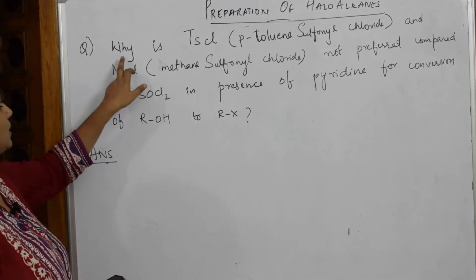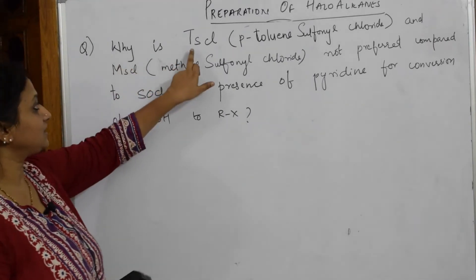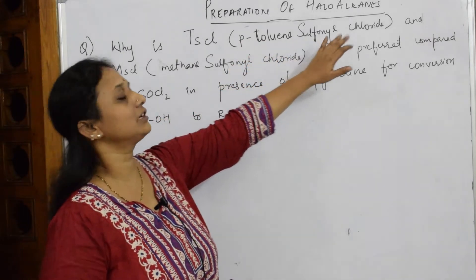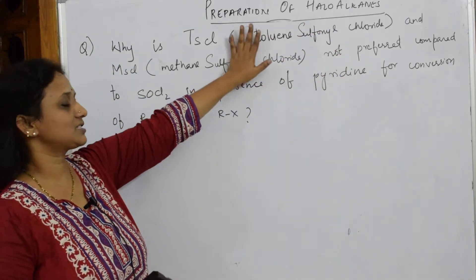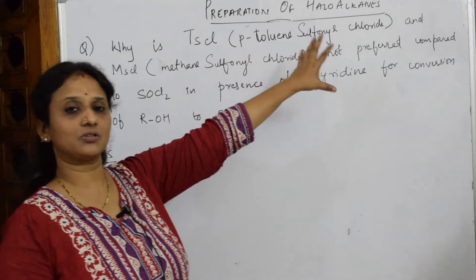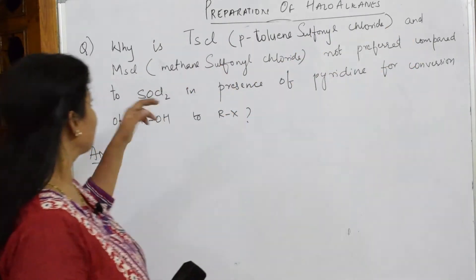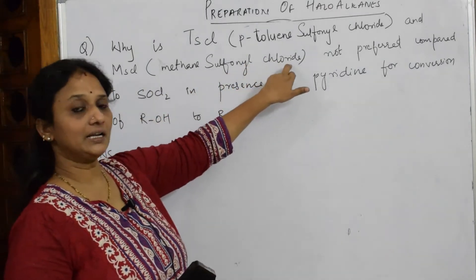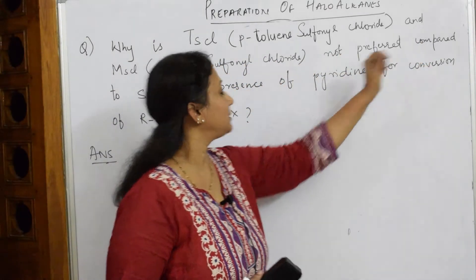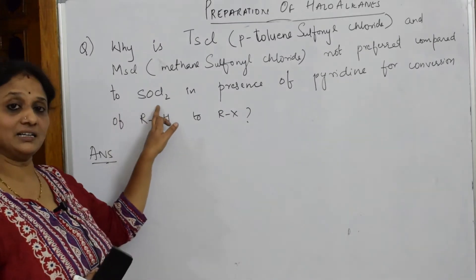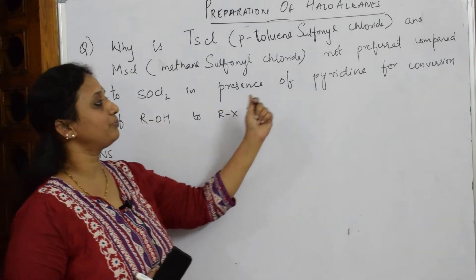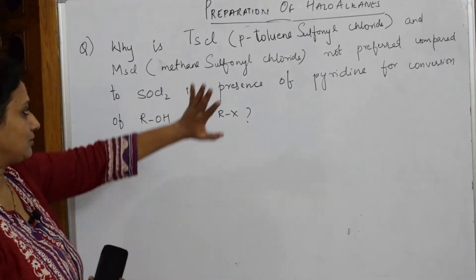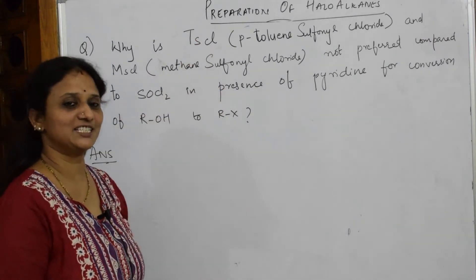They have given us, why is TSCl - what does it stand for? Para-toluene sulfonyl chloride. Compound is given for us, just read the question: Why is TSCl and MSCl methane sulfonyl chloride not preferred compared to thionyl chloride in presence of pyridine for conversion of ROH to RX? Question is big but answer is very simple, let us see.